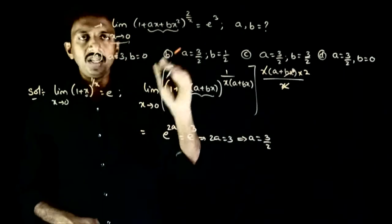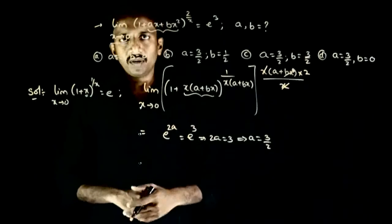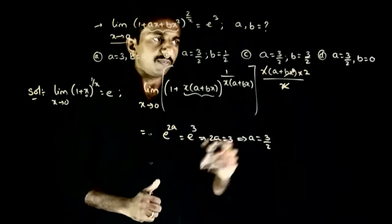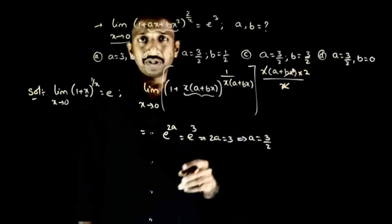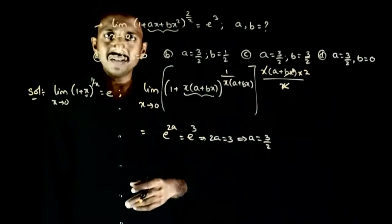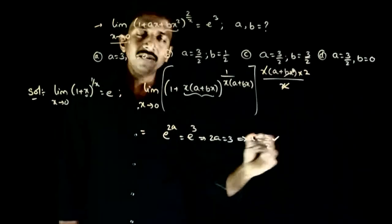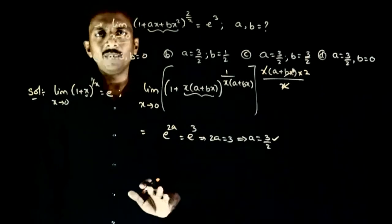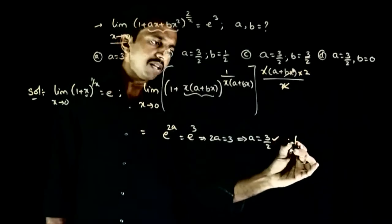So if this limit has to be e cube, A has to be equal to 3 by 2. So b kya hona chahi hai? B kuch bhi ho sakte hai. Because the value of this limit is not depending on b. So b kuch bhi ho The value of the limit is always e cube As long as a is equal to 3 by 2. So aap a condition is a is equal to 3 by 2, B can be any real number.